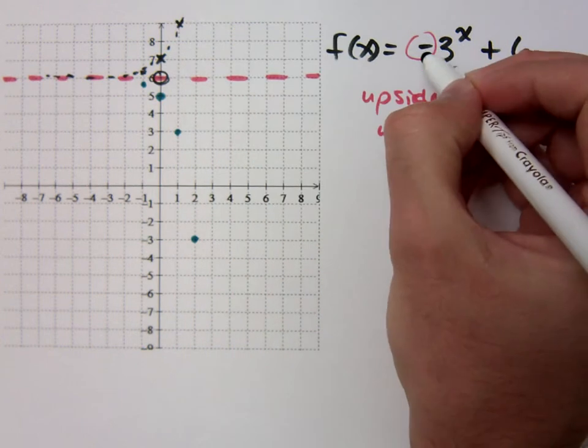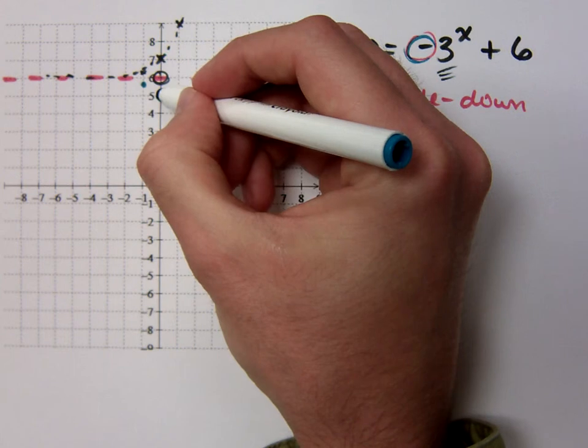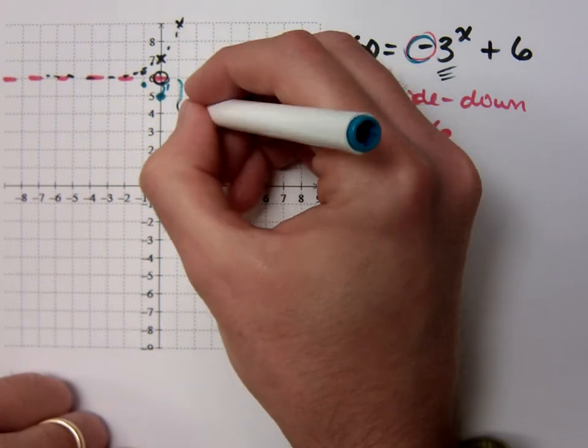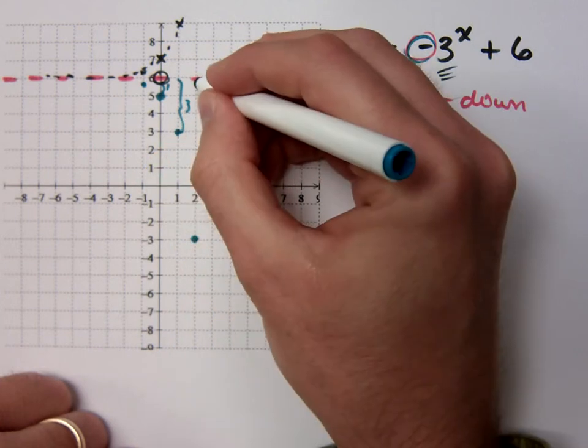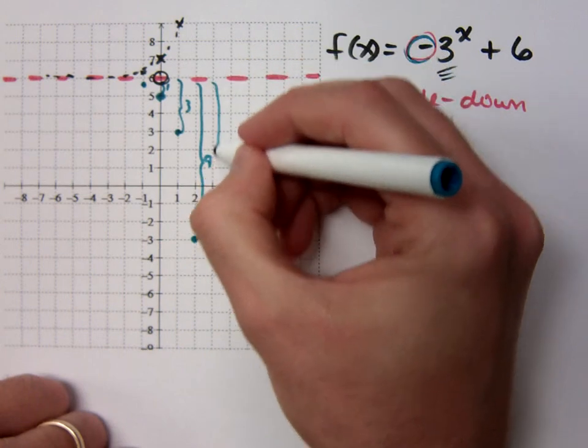But since I had a negative in front, that meant that I was going to be down. Now, if I go to the right, I'm going to multiply this distance here, which is 1, by 3. Multiply that distance by 3, and I get 9. Multiply by 3 again.